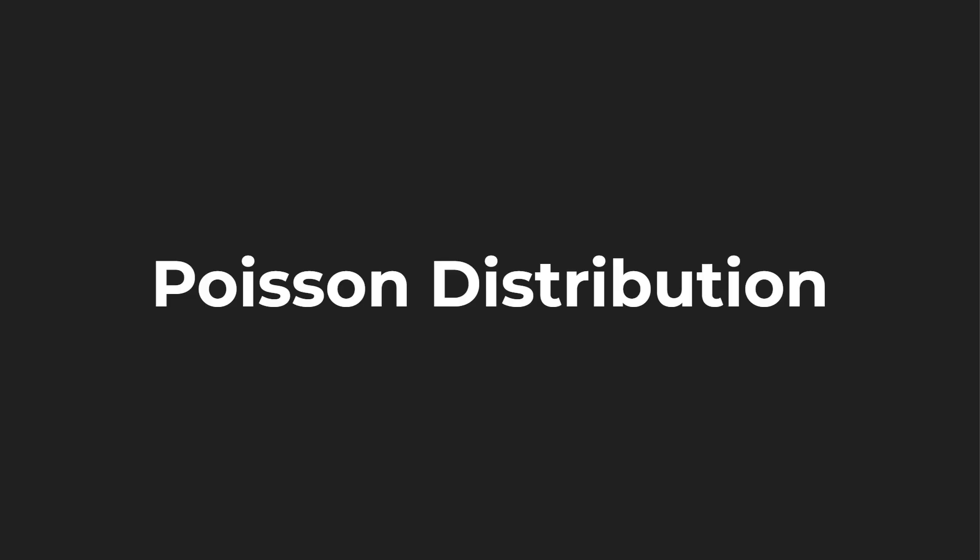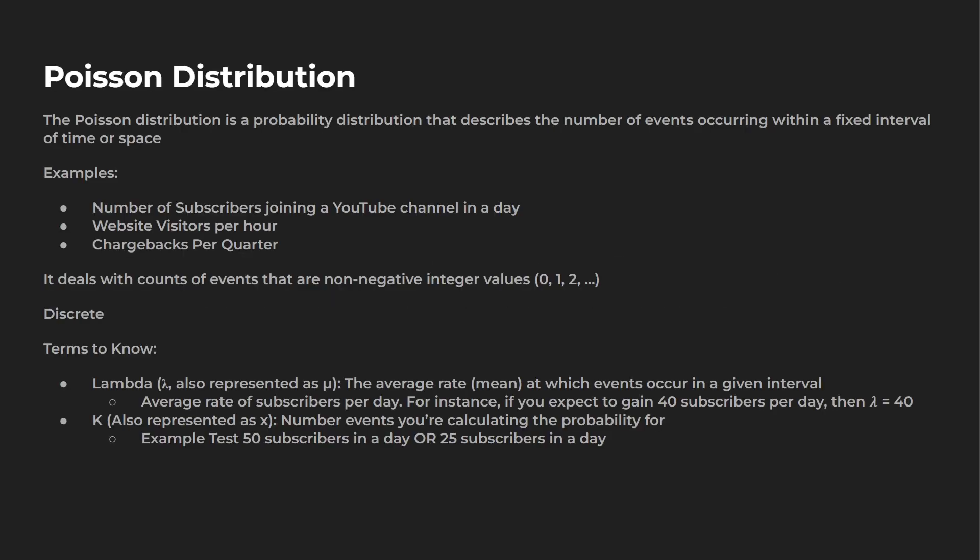So let's take a look at a little more information about the Poisson distribution. Just going to reiterate the definition: the Poisson distribution is a probability distribution that describes a number of events occurring within a fixed interval of time or space.